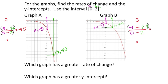I'll put the numerator and denominator in parentheses and enter it in the calculator: (negative 1 minus negative 2.4) divided by (0 minus 2). For this graph, I get negative 0.7.